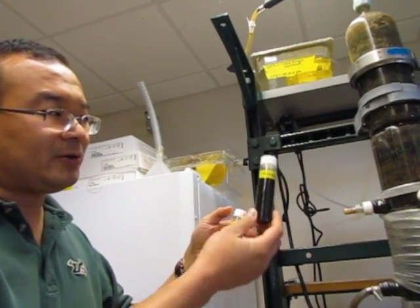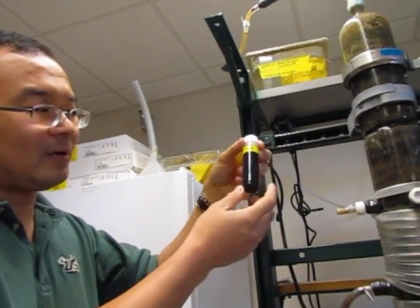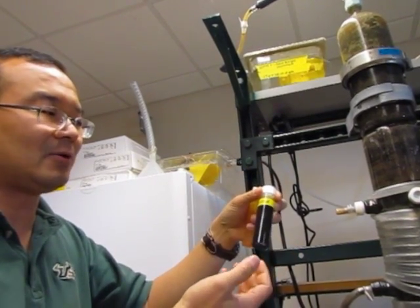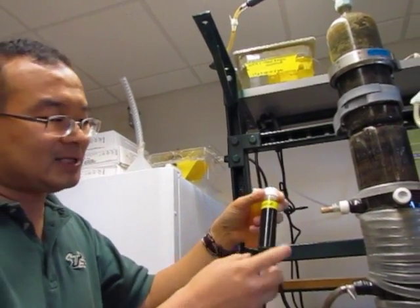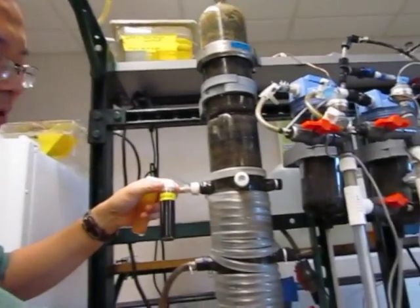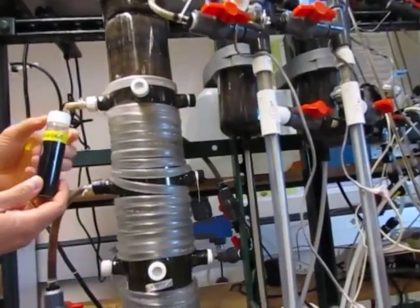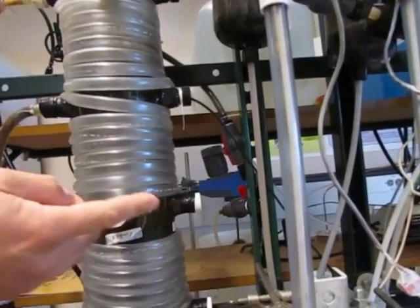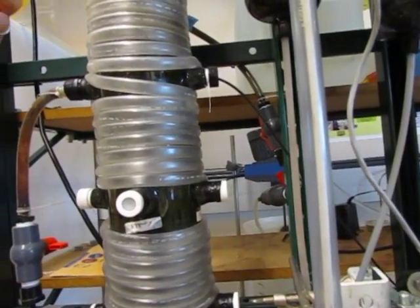And then when they're done, we can't quite use this because it's all black and not quite usable. So we pass the contents through this part—that's the membrane part of the system. These are ultrafiltration membranes that have pores that are submicron size.